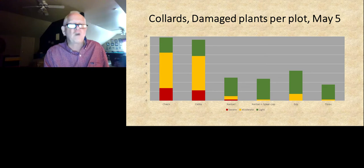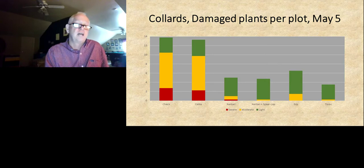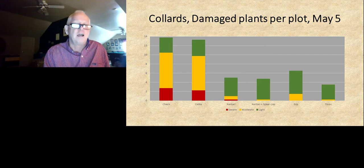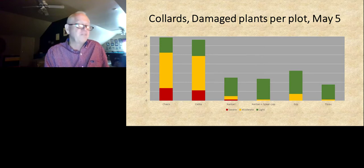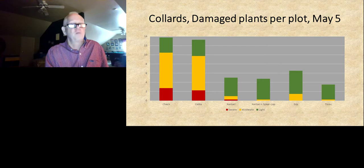We had one field trial with pretty good populations last spring where we looked at Xentari, Spear LEP, and Sea-Lect, one of the diatomaceous earth products. The diatomaceous earth product gave us very little protection of the crop, if any. The Spear LEP really did not look much better than the BT alone. We continue working with these products, but at this point I can't say I know how to use them to provide much additional benefit.